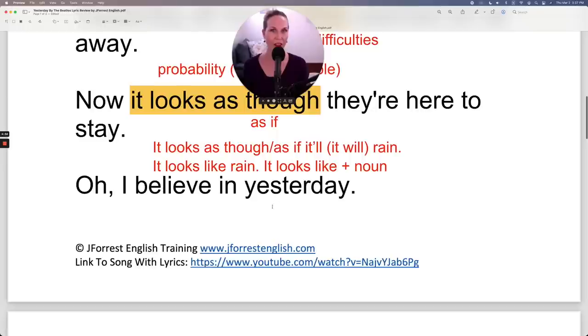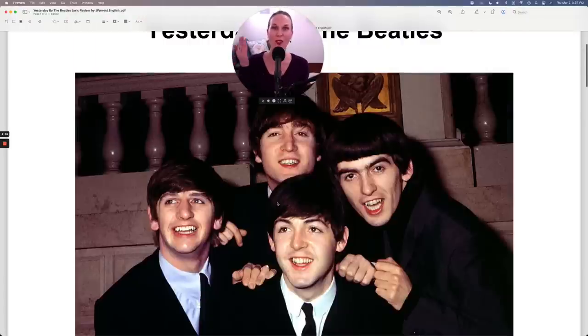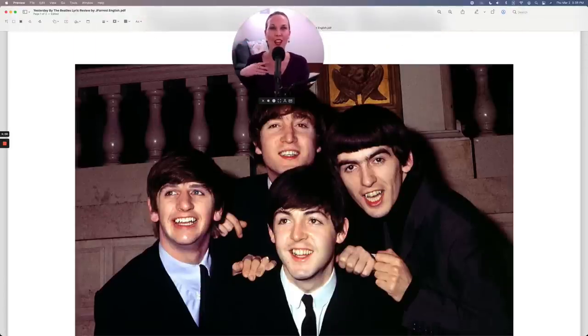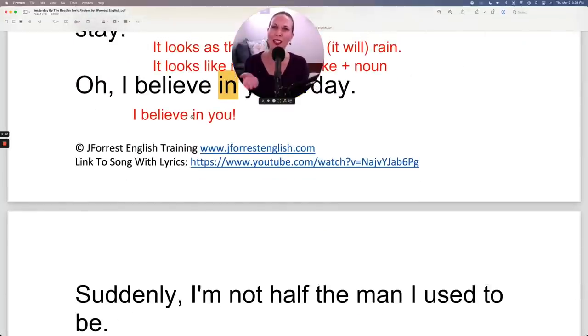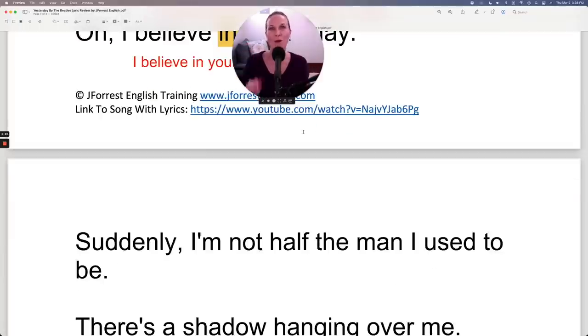Oh, I believe in yesterday. Now, just quickly notice the preposition is always important to remember which prepositions are used with which words. Believe in. You believe in something. And a very nice thing to say to someone is, I believe in you. So if your friend tells you they want to be the next Beatles, they want to be an amazing singer, songwriter, you can say, I believe in you. I believe in your vision, your goals, your dreams. I believe in you. It's a very nice thing to say. So say that to someone today. It will make them very happy. And I believe in you, all of you, and your ability to become a fluent, confident English speaker. Hopefully with my help.